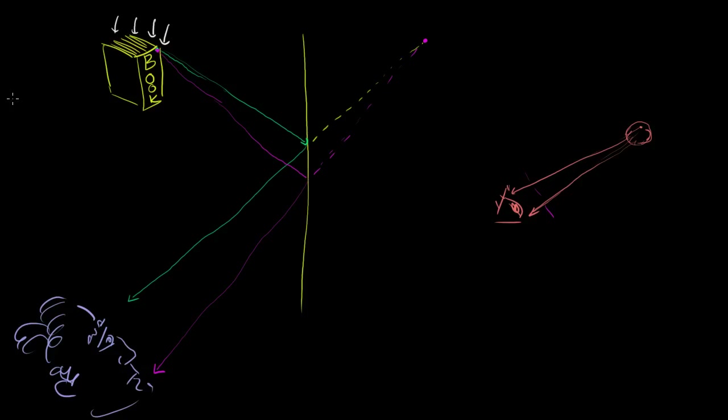So what the person would actually see is something like this — and this is probably not too foreign to any of our experiences, since we've all looked in mirrors. This is the right side of this book — the side that has the curvy part of the B. So it'll look like this. What this observer sees is an image that is what people call the mirror image. It is flipped — the left and the right is flipped.